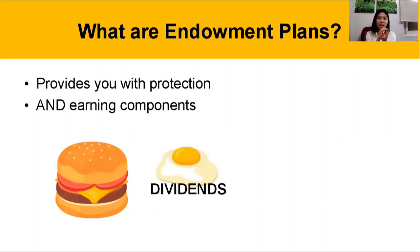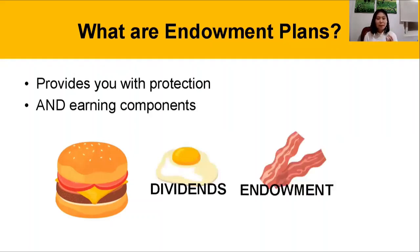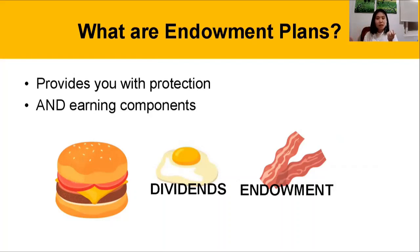The egg, let's say, that's the dividends, and then the endowment is the bacon. Basically, what this means is that the burger itself can live on its own, and these toppings — dividend and endowment — can be freely taken out of the plan, and the plan will still continue to be active.